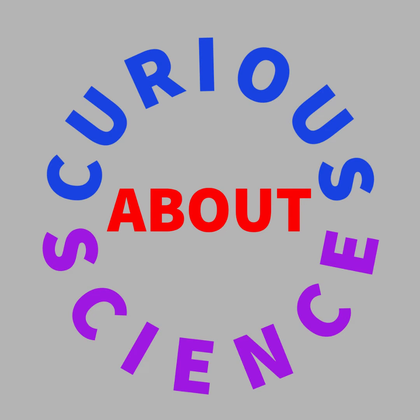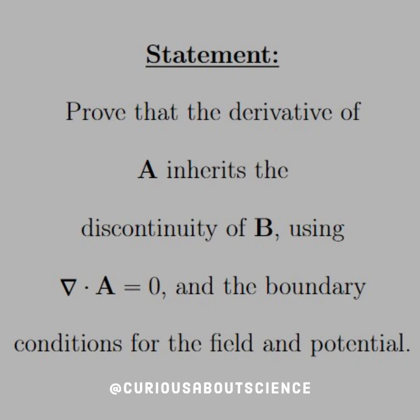Hello all! Our statement reads: prove that the derivative of A inherits the discontinuity of B using the divergence of A equals 0 and the boundary conditions for the field and potential.